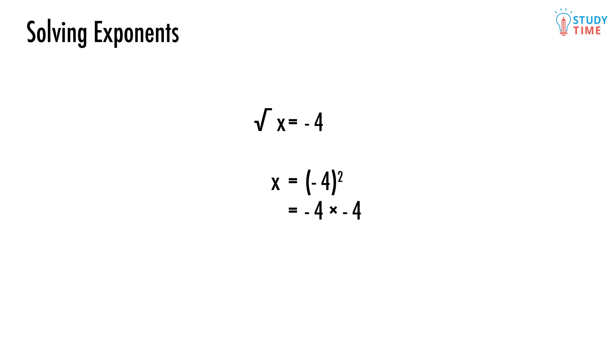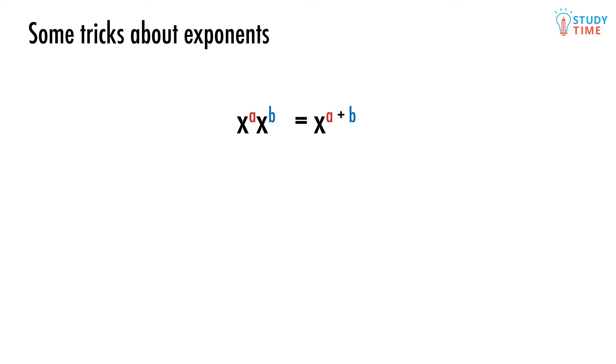There's a couple of last tricks about exponents, and these are important to remember. x to the power of a times x to the power of b equals x to the power of a plus b. So x squared times x cubed equals x to the power of 2 plus 3, equals x to the power of 5.